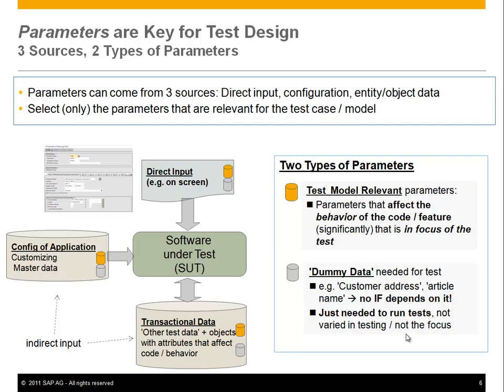Each of these three different sources of input is relevant for the test. For all three there are two types of parameters to consider. One is test-model-relevant: parameters that affect the behavior of the code in some way — this is the focus of the test. And then there is always some dummy data you need to run the test but wouldn't model, for instance a customer address, article name, or description text. There is no 'if' in the code that depends on it, so you just need some data there to run the test at all. For modeling purposes — thinking about smart ways to cover the parameter space — we only look at test-model-relevant parameters.